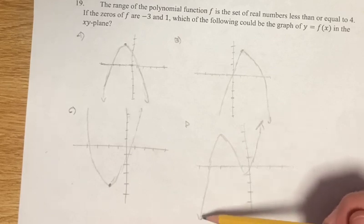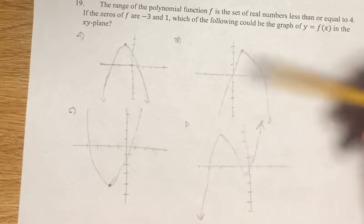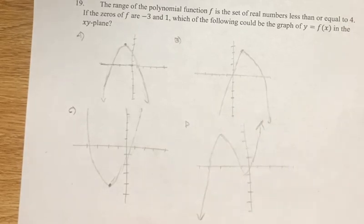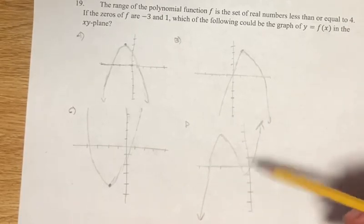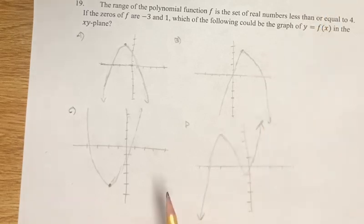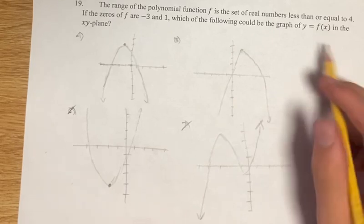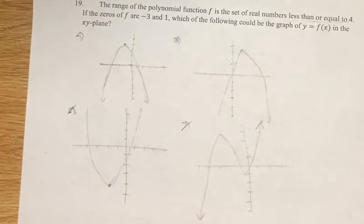And then if you look at this, we have no bound on the lower limit or the upper limit. So the range is just all real numbers. It goes from here to positive infinity and from there to negative infinity. So c and d, their range is not all the numbers less than or equal to 4.